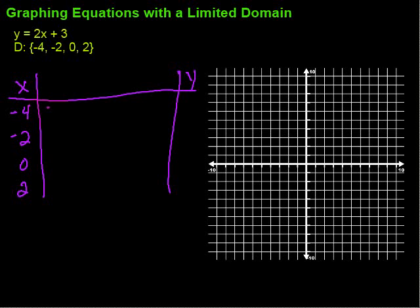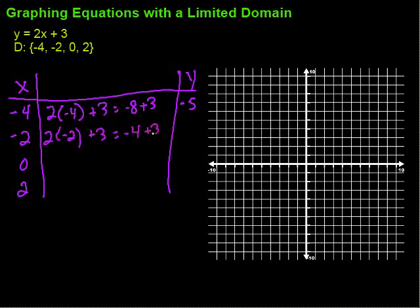So it's going to be 2 times x, that first x, remember the domain is a set of the x's, is negative 4 and then plus 3. So 2 times negative 4 would be negative 8 plus 3, and negative 8 plus 3 would be negative 5. Next one, negative 2, so 2 times negative 2 plus 3. 2 times negative 2 would be negative 4 plus 3, which is negative 1.